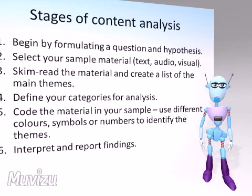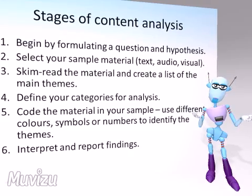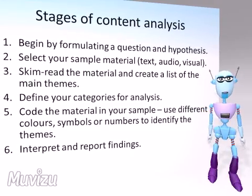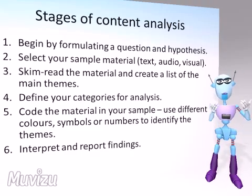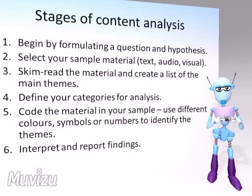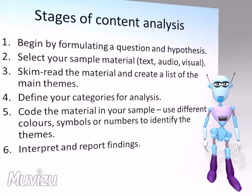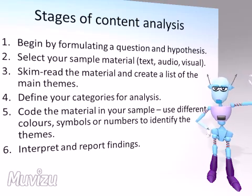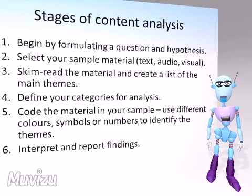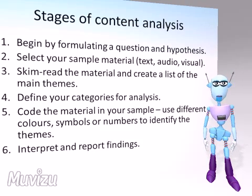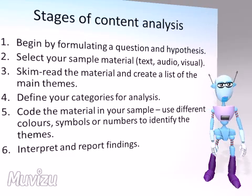There are a number of stages that you need to work through when carrying out a content analysis. To start with, you need to formulate some questions and a specific hypothesis that you can then test. Once you've got this as your starting point, then you can select your sample material — this could be samples of text or audio or some visual material. It's really important to skim read the material first and then create a list of the main themes that crop up, and then using that list you can define your categories for analysis.